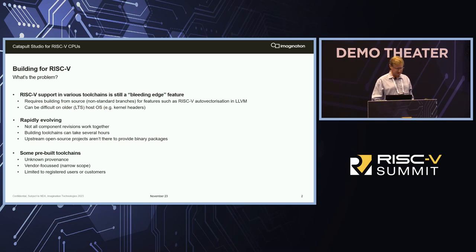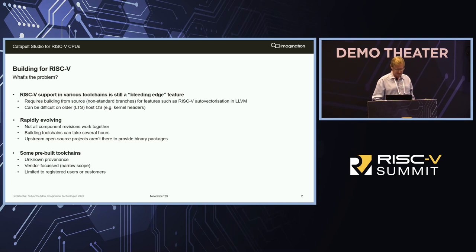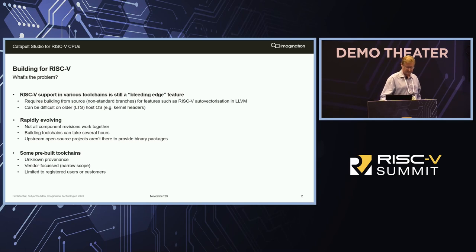And there just aren't binary packages available. Those open-source upstream projects are there to get code reviews done and move the projects forward, not to provide binary packages, which would usually come from Linux distros and the operating systems themselves. So if you reach for your favorite search tool and look around for pre-built toolchains, there are some out there — some obviously of unknown provenance. There are several now very much vendor-focused, perhaps with slightly narrow scope for their particular boards, and they're often limited to registered users and customers of those RISC-V vendors.